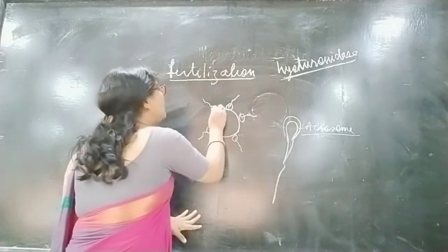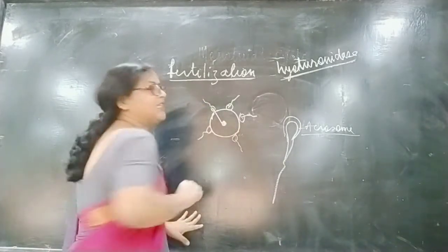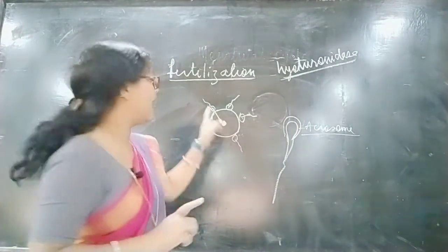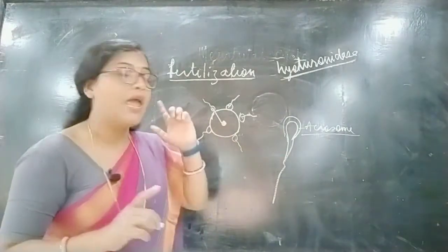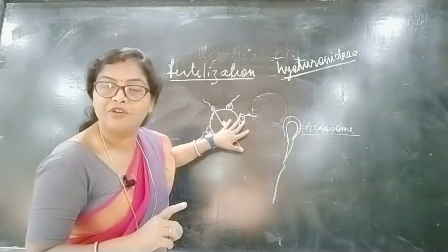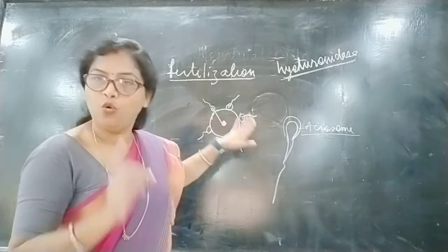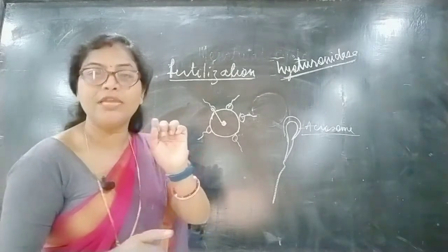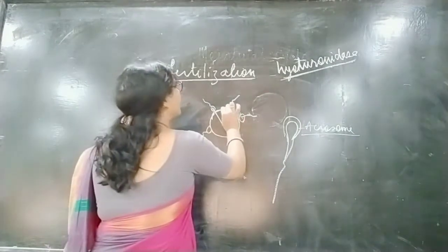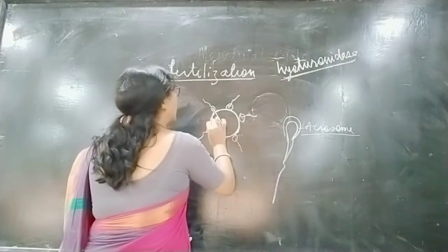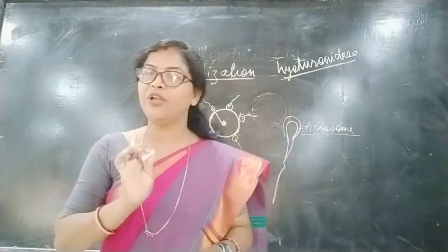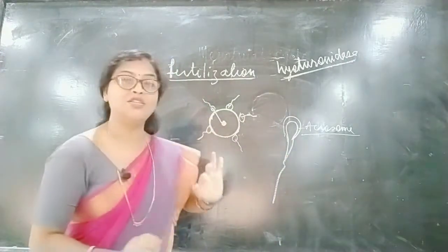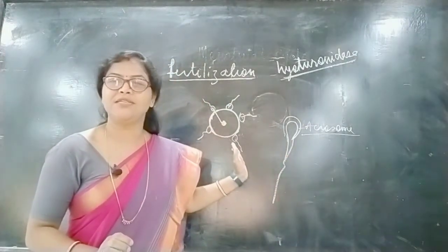Only the nucleus of the sperm goes in and fuses with the ovum. As fertilization occurs, the ovum releases a chemical. That chemical surrounds the ovum and closes the entry for any other sperm. This is how fertilization occurs.